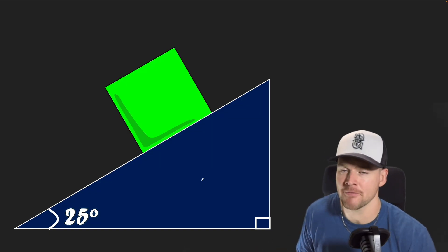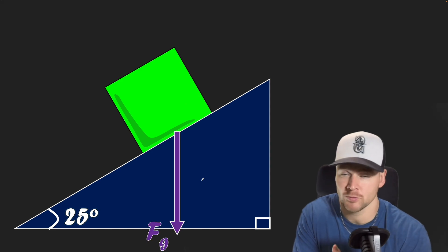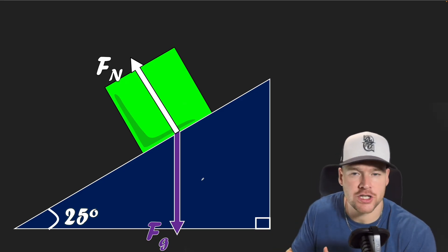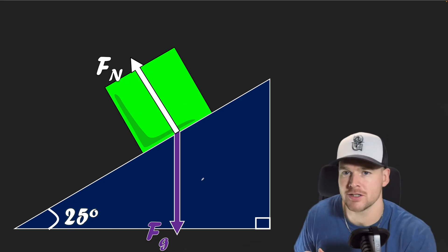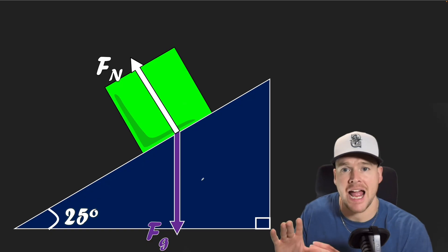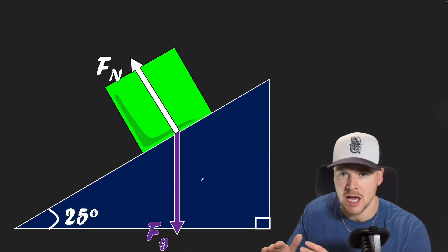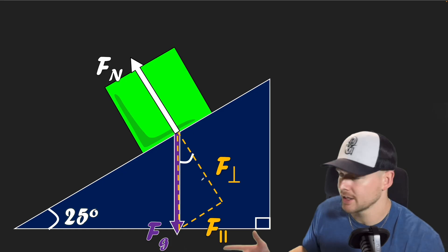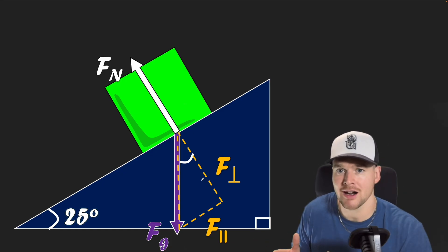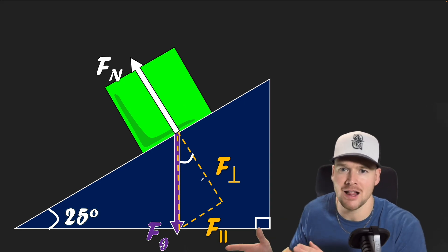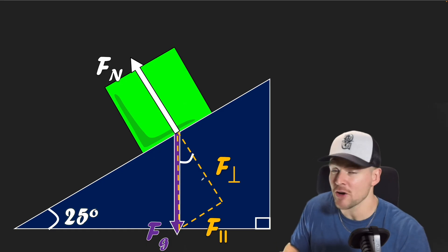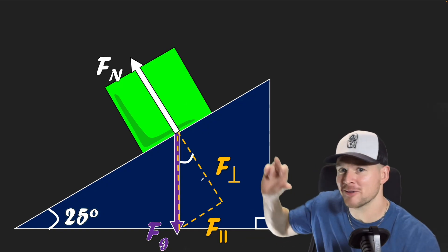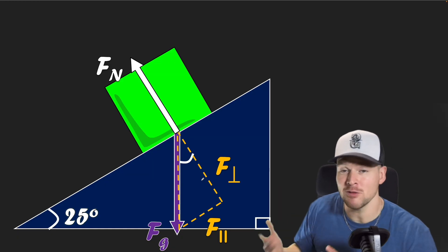Let's look at what forces could be involved. We'll always have FG and FN. The most simple example has no friction and no applied force — maybe the question asks how fast a mass will accelerate down a frictionless surface. Before we do anything else, we should break gravity into components. When solving for acceleration, we keep parallel and perpendicular separate. In the perpendicular direction, there's never any acceleration — the mass won't lift off or sink into the ramp, so FN and F-perpendicular are always equal.